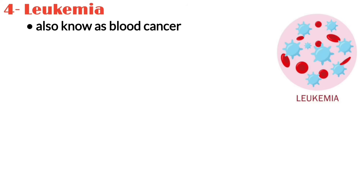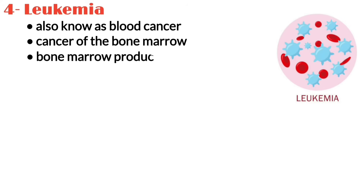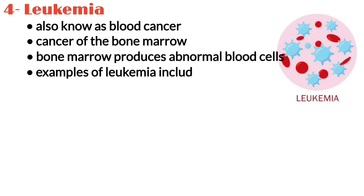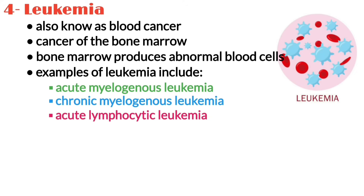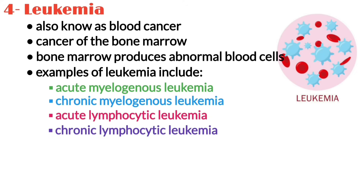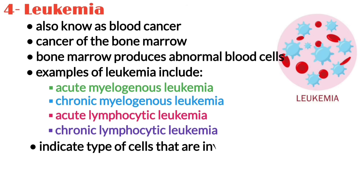Number four is leukemia. Leukemia, also known as blood cancer, is a cancer of the bone marrow that keeps the marrow from producing normal red and white blood cells and platelets. Examples of leukemia include acute myelogenous leukemia, chronic myelogenous leukemia, acute lymphocytic leukemia, and chronic lymphocytic leukemia. The terms myelogenous and lymphocytic indicate the type of cells that are involved.